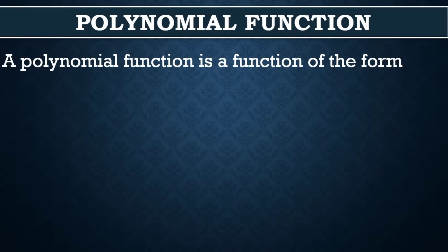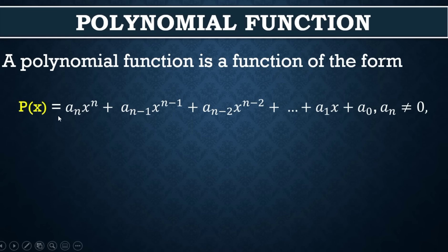So what is a polynomial function? A polynomial function is a function of the form p(x) = aₙxⁿ + aₙ₋₁xⁿ⁻¹ + aₙ₋₂xⁿ⁻² + ... + a₁x + a₀, where aₙ is not equal to 0.